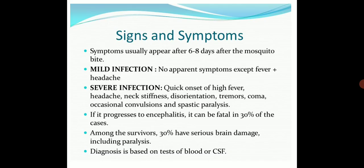Coming to the signs and symptoms, there are two types of infection: mild and severe. Symptoms usually appear after 6 to 8 days after the mosquito bite. Mild infection shows no apparent symptoms except fever and headache, whereas severe infection includes high fever, headache, neck stiffness, disorientation, tremors, coma, occasional convulsions and also spastic paralysis.